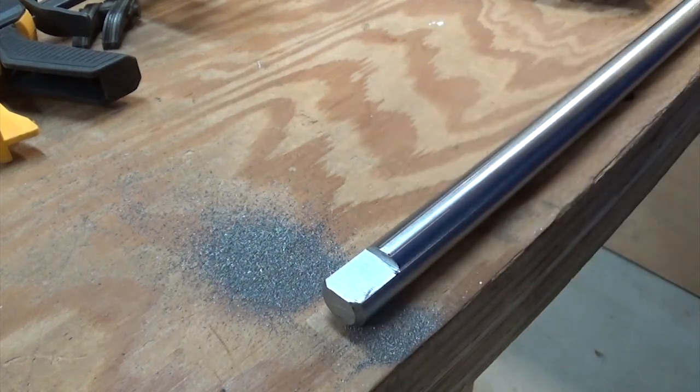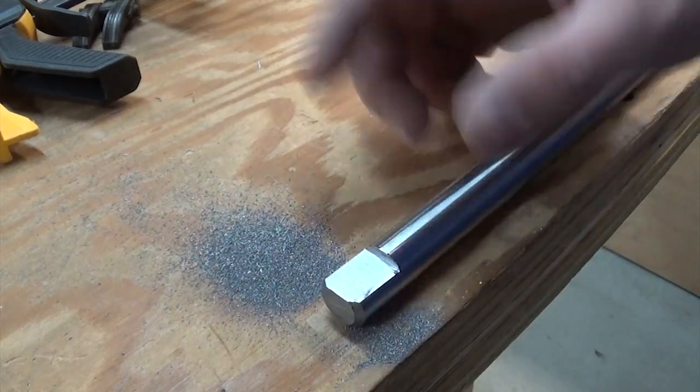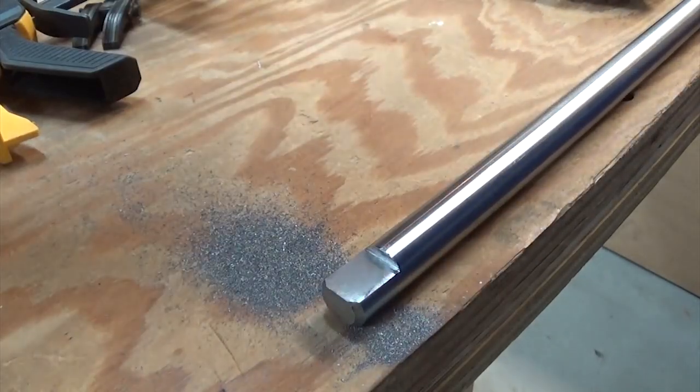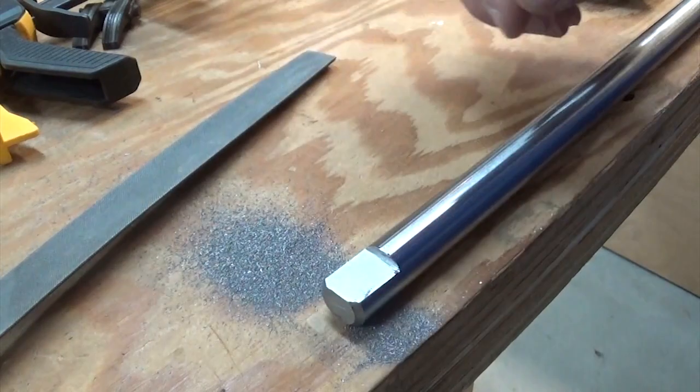And after some filing that sounded a whole lot like the Harbor Freight 1 inch belt sander running, we have the flat spot on this side. Now all kidding aside, if you have a little belt sander, it really speeds up the process to remove the bulk of the material with that and then just come in with the file and true it up afterwards.